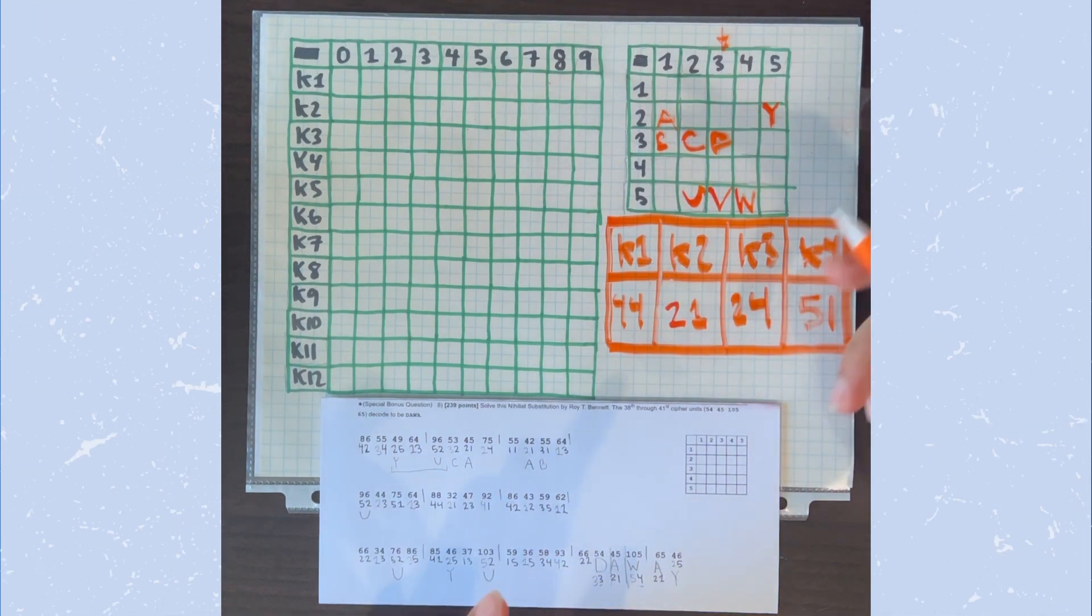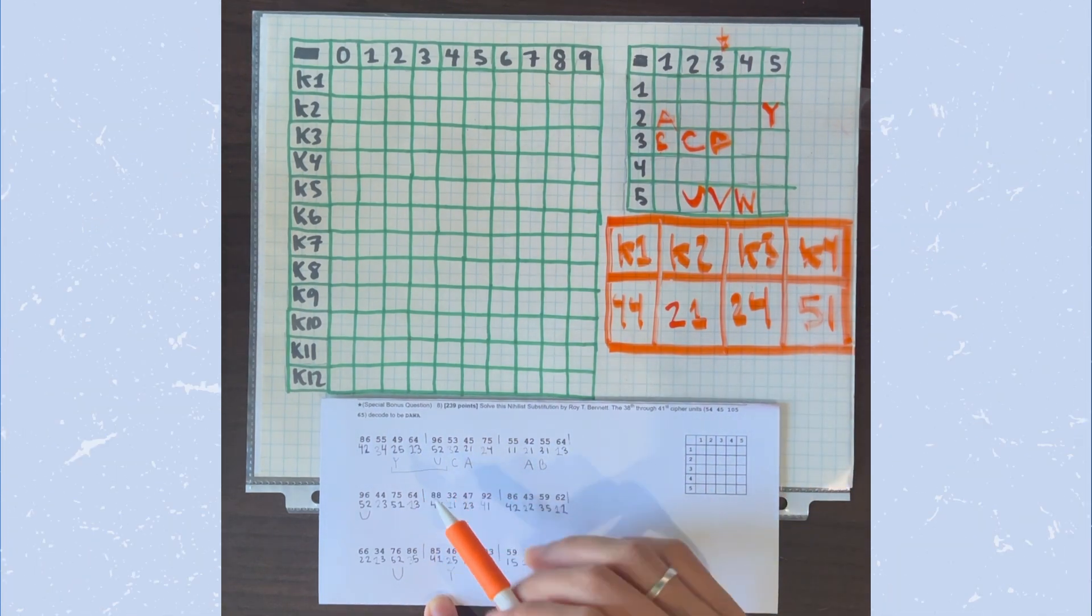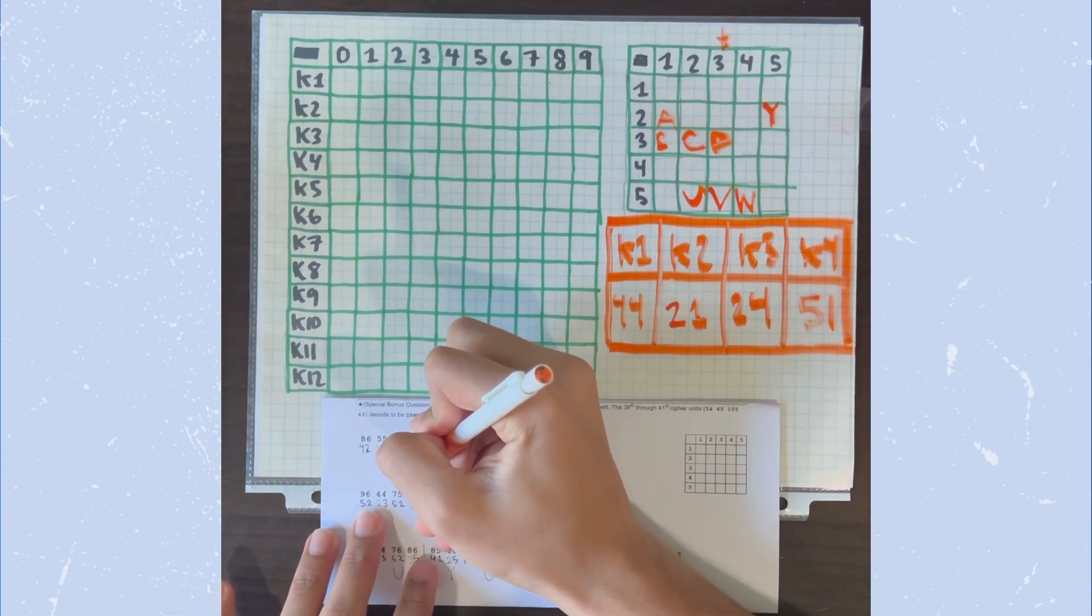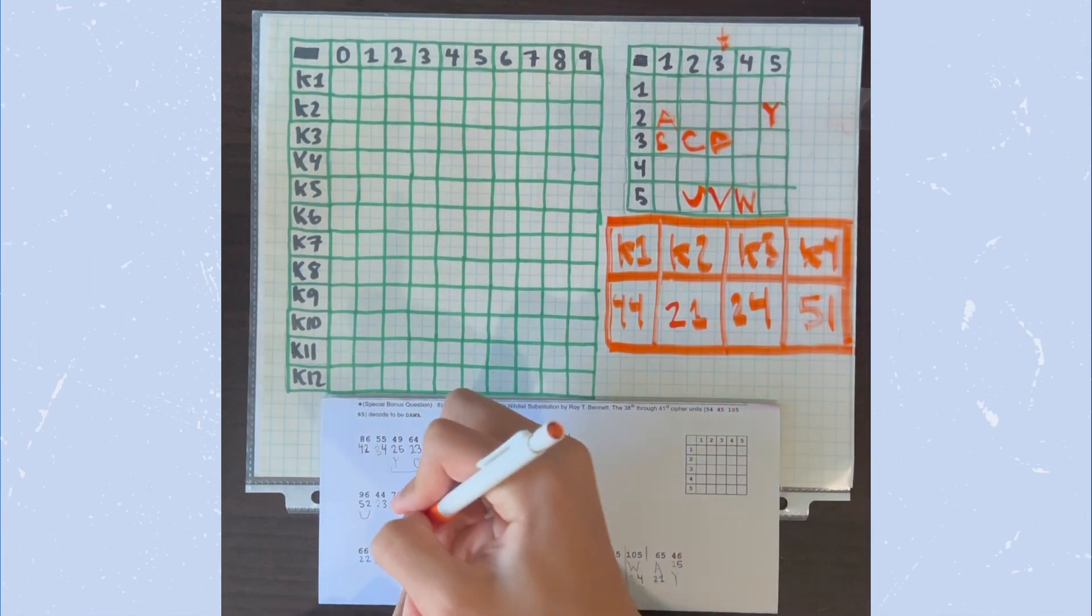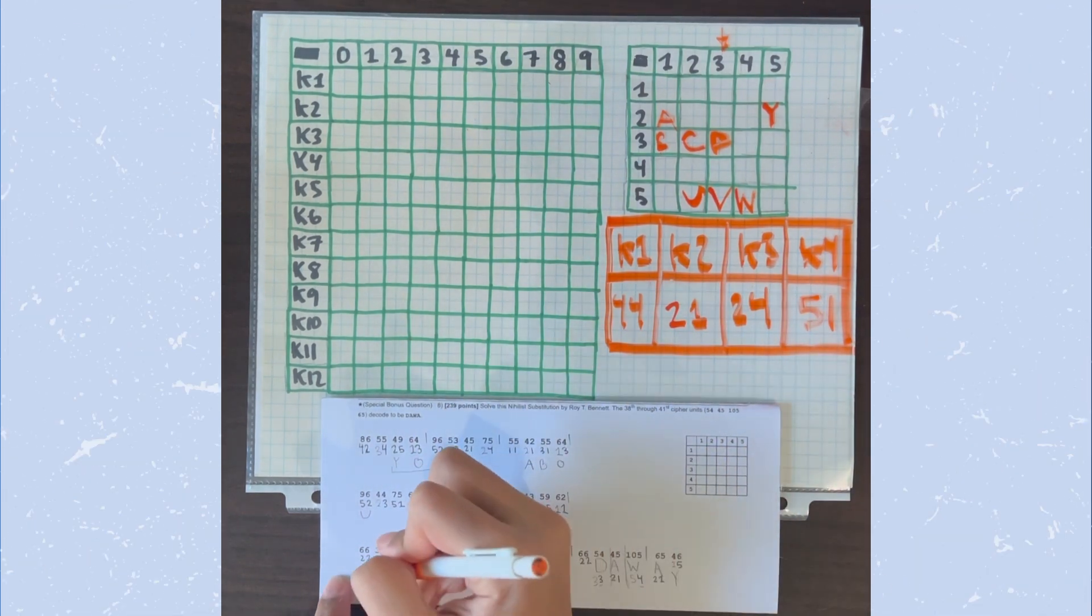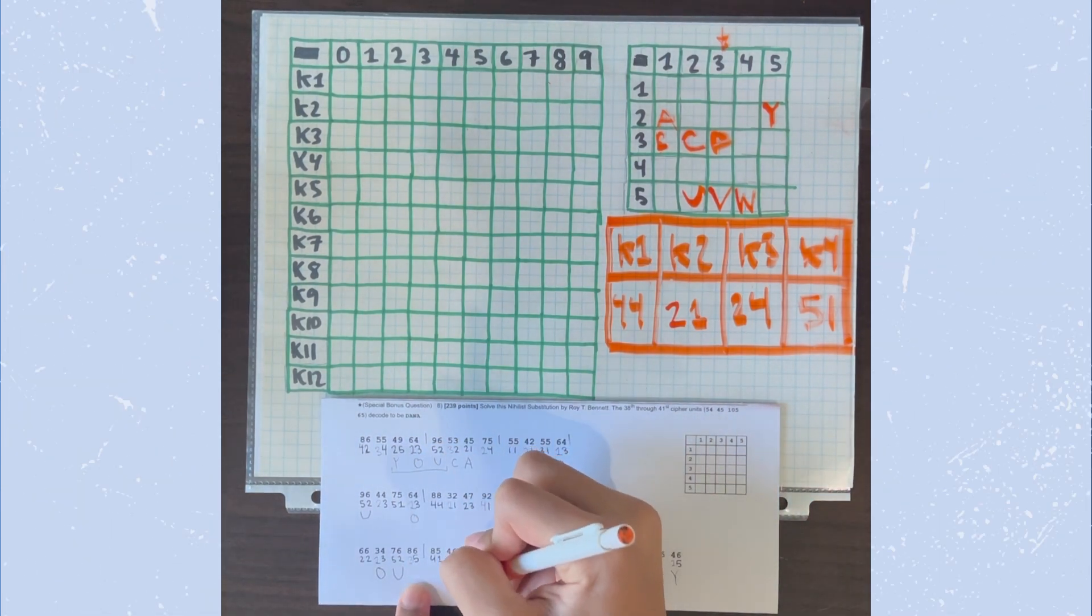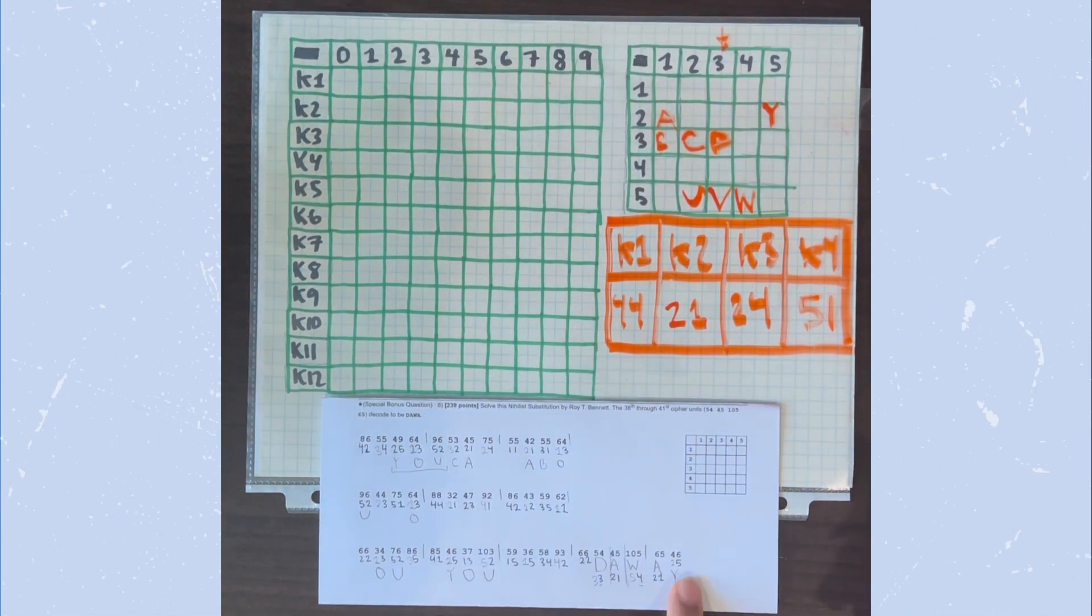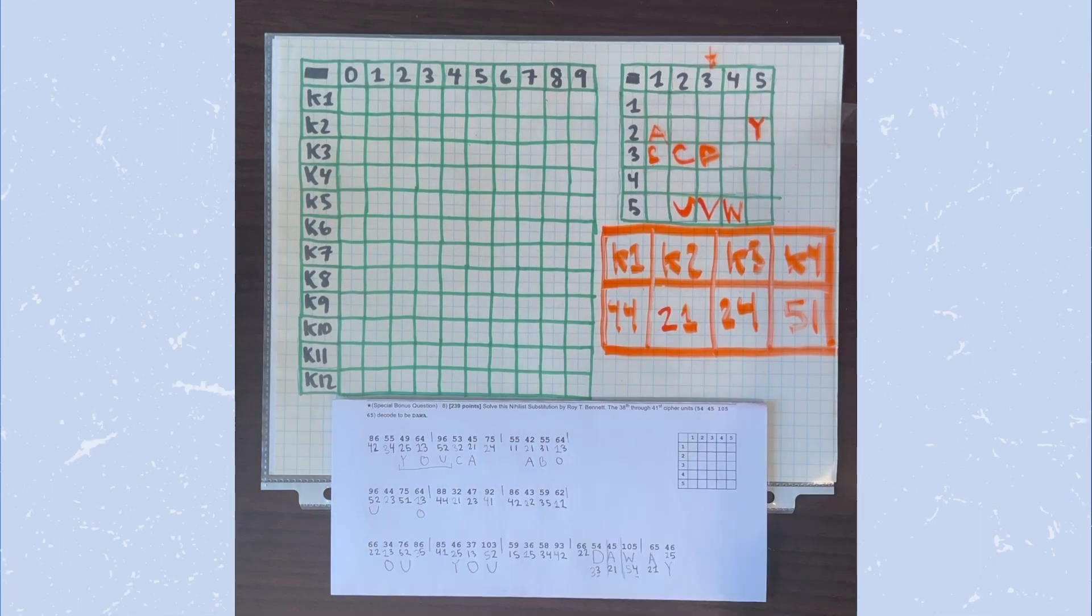All right. So now that we've put in 52 to U, let's now go to the next step, which is putting in 13 to O. So we have 13 to O right here. Right here again. 13 to O. Right here. And that should be it.